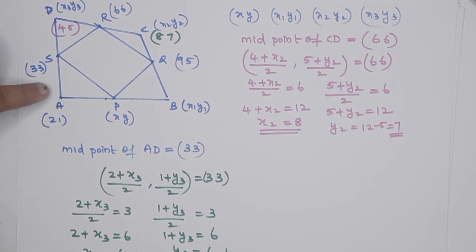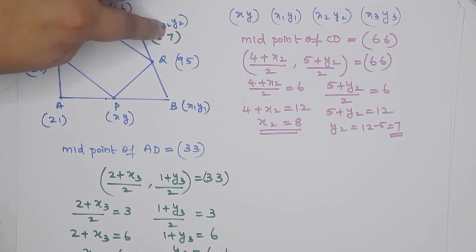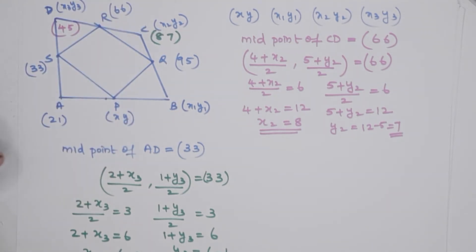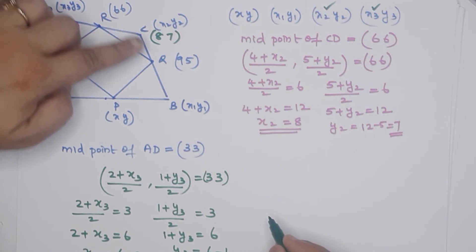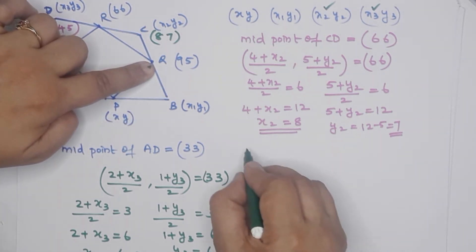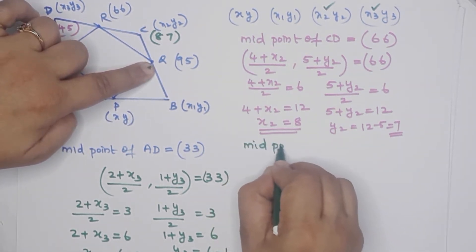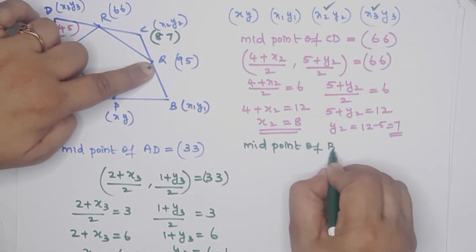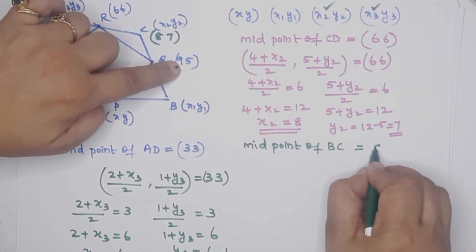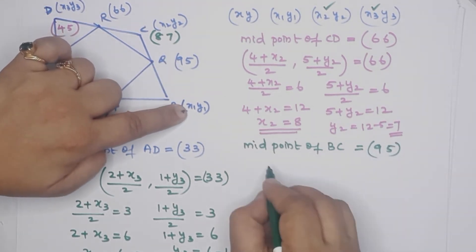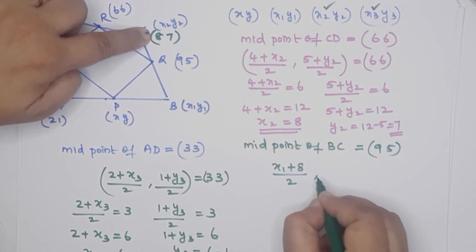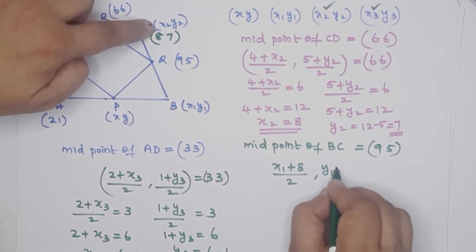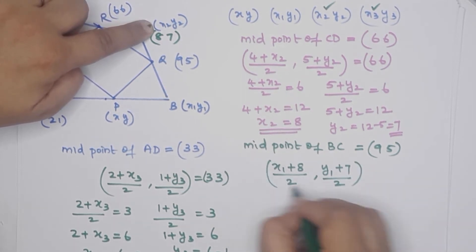We already have: A at (2, 1), D at (4, 5), C at (8, 7). Now let's find x1, y1 which is point B. The midpoint of BC is given as (9, 5). So we write: (x1 plus 8 over 2, y1 plus 7 over 2) equals (9, 5).